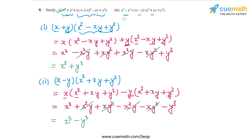That is the left-hand side, so that verifies the second identity as well. By the way, these identities are quite often used in expressing the sum or difference of two cubes in product form. Please remember these identities because they are very important and very often used.